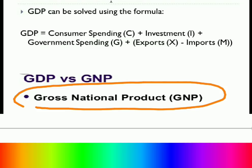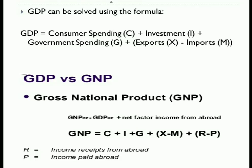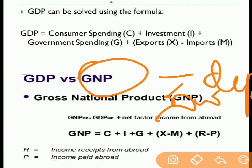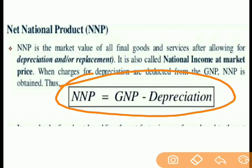So this is the difference between GDP and GNP. NNP stands for Net National Product. If GNP is 90 and depreciation is accounted for, the result is NNP. I will explain: NNP equals GNP minus depreciation.